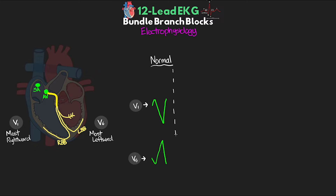Now let's look at how this changes with our blocks. Keep in mind that for the next sections I'll use illustrations of what we'd expect to see, but as you'll see with example EKGs in a moment, the exact morphology will look slightly different from EKG to EKG. With a right bundle branch block, things change both in how electrical conduction and depolarization take place and how that's represented on our 12-lead. The signal is not going to be moving down the right bundle branch.